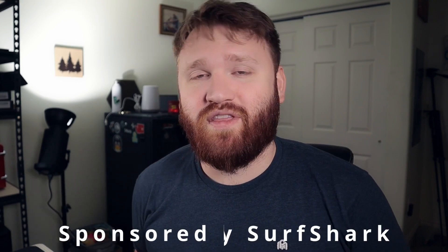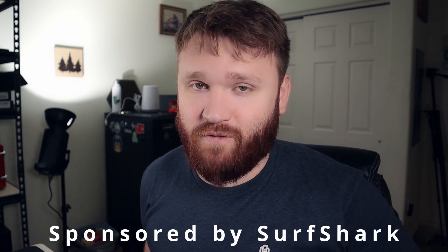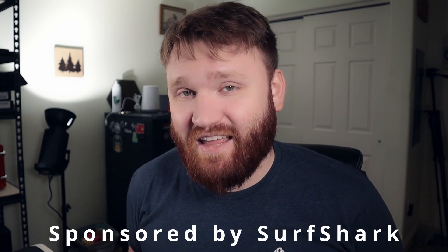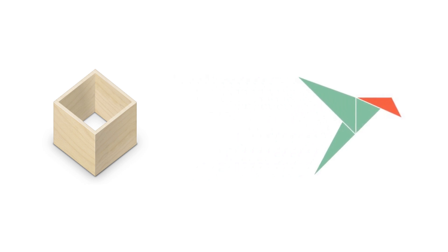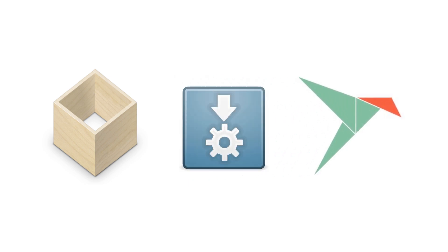Before we get into the actual benchmarking, we must first talk about what these different packaging formats are and what are some of the key differences between them. We're going to be focusing on Flatpaks, Snaps, and AppImages. All of these have the benefit of being independent from your Linux distribution, meaning that no matter what version or distribution of Linux you are running, you can run all of these packaging formats.